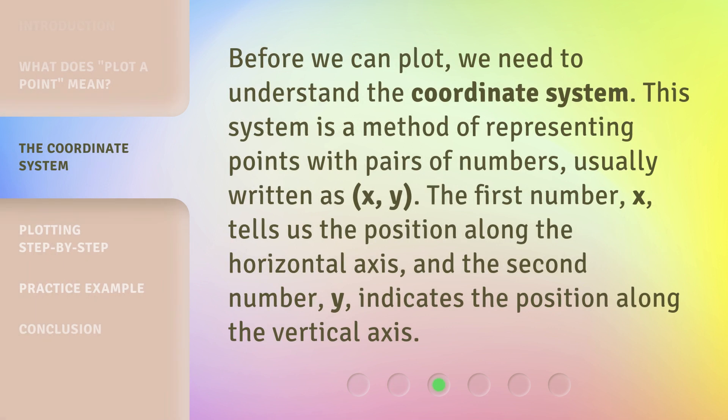Before we can plot, we need to understand the coordinate system. This system is a method of representing points with pairs of numbers, usually written as (x, y). The first number, x, tells us the position along the horizontal axis, and the second number, y, indicates the position along the vertical axis.